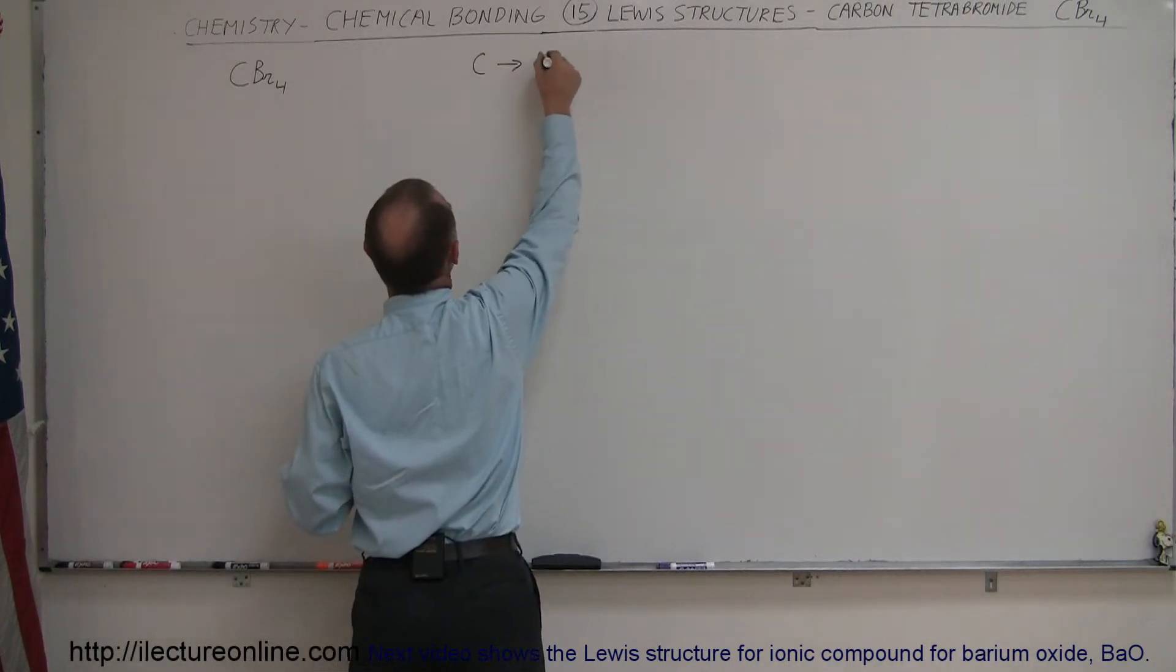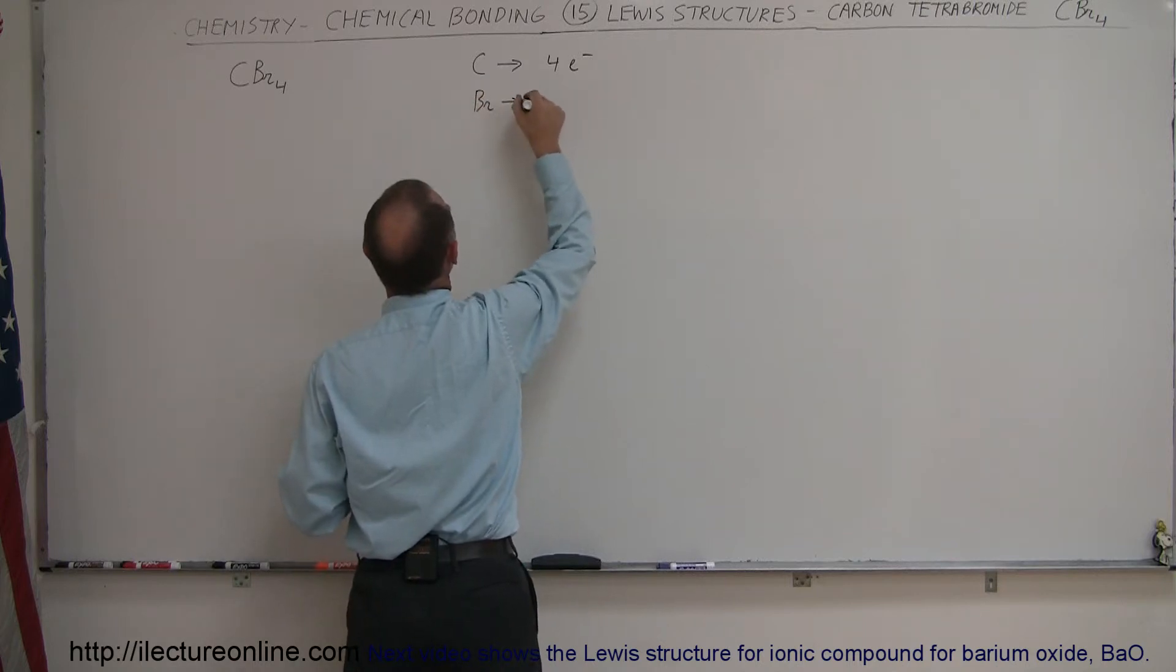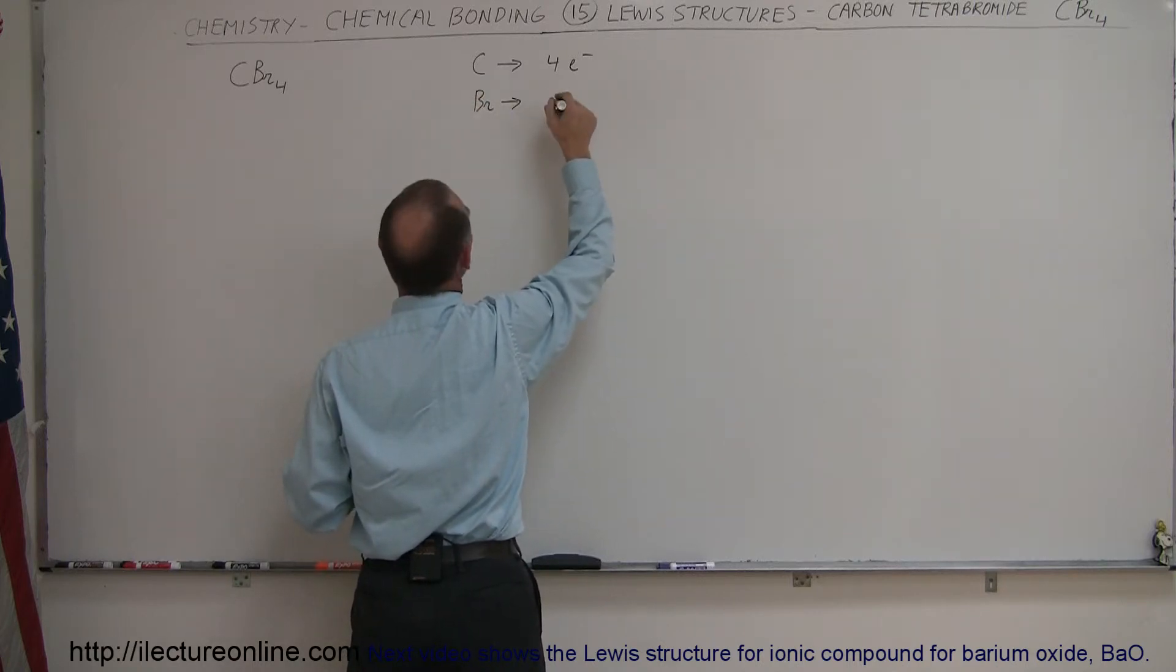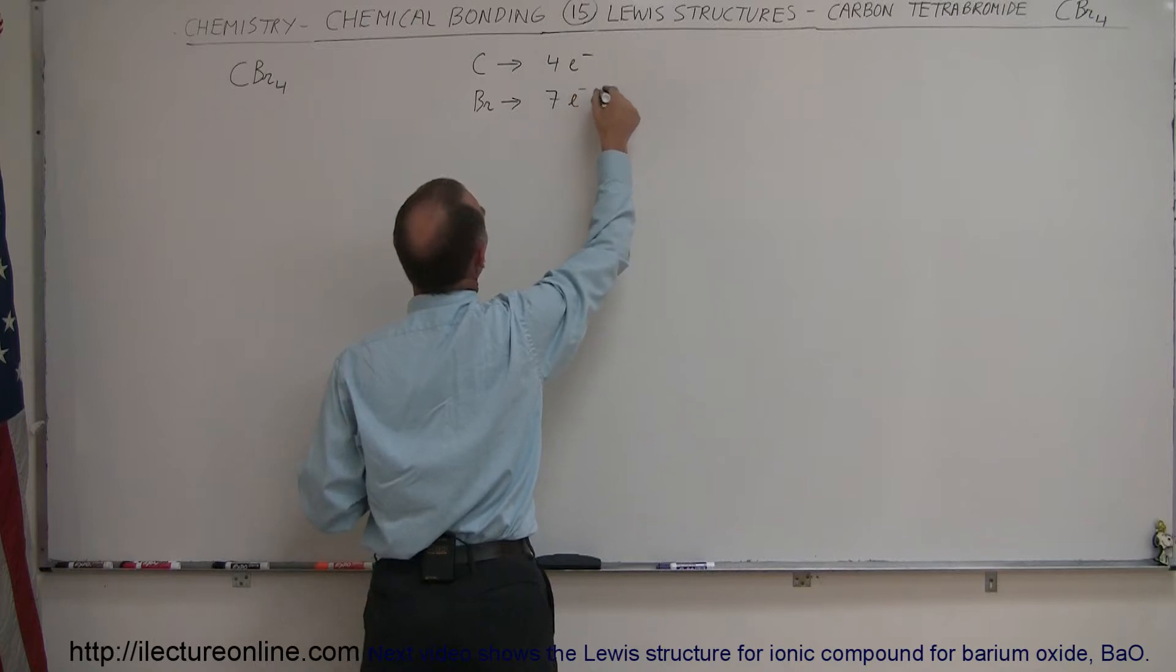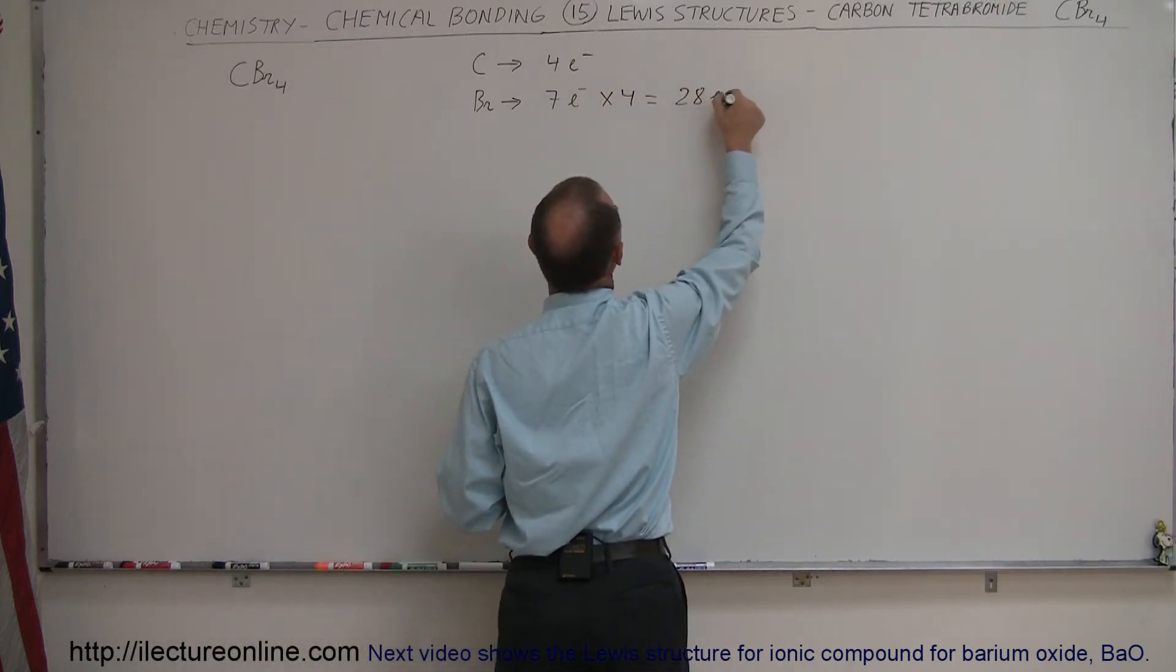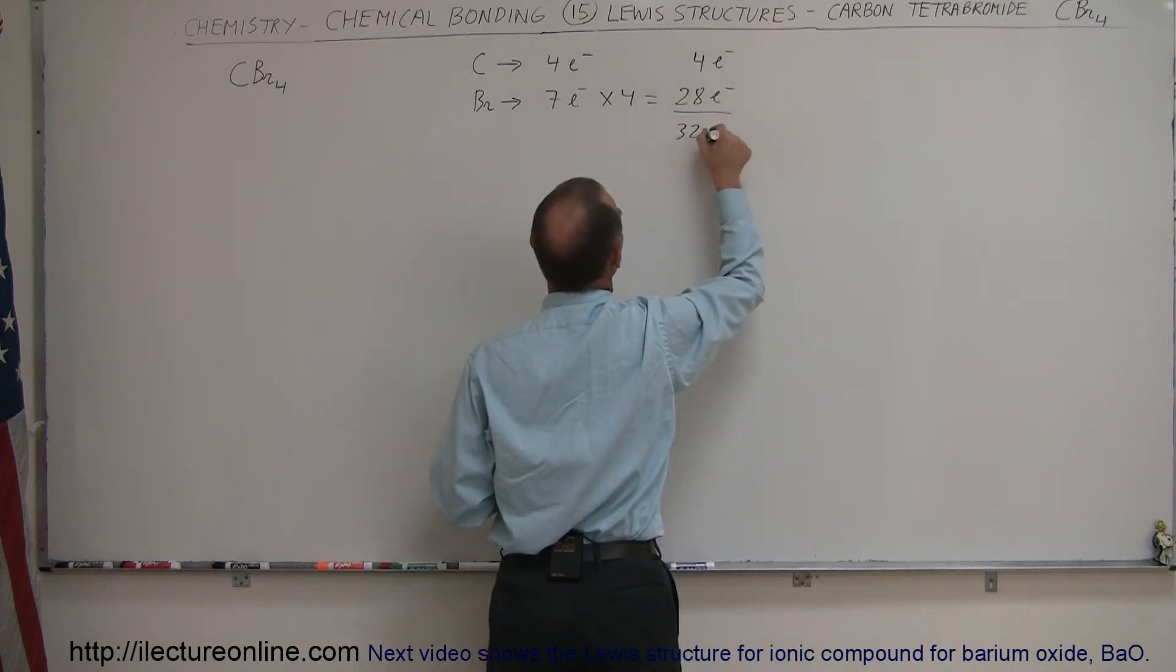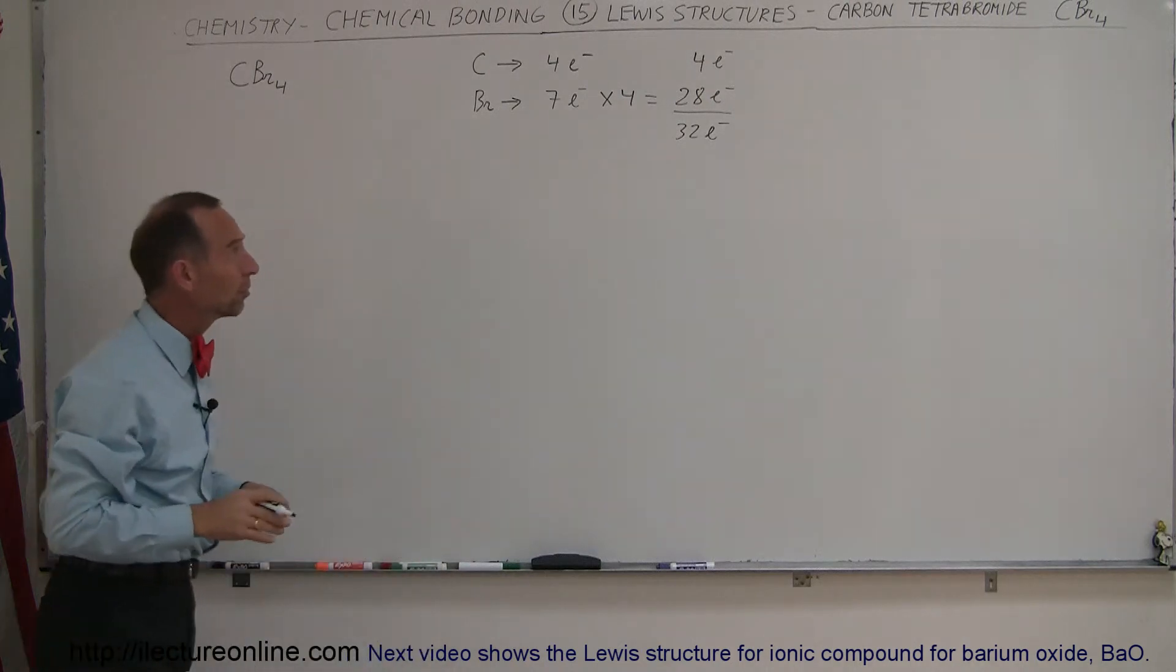Carbon contains four valence electrons. And bromine contains seven valence electrons. And there's four of them. So four times seven is 28 valence electrons plus four for carbon. That's a total of 32 valence electrons available to make these bonds.